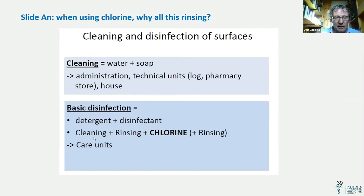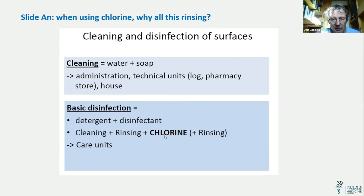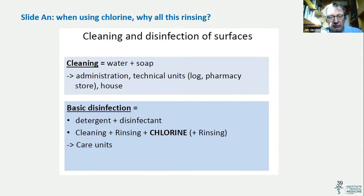If you clean, you clean with detergent or soap. But we know that soap residues can interact with chlorine. So we clean, then we rinse, and then we apply chlorine. But chlorine leaves a residue — it stays on the bench or surface and is corrosive. So that is why after the chlorine, we need to rinse the residue away.